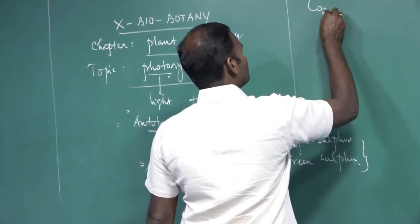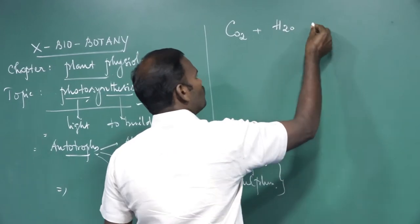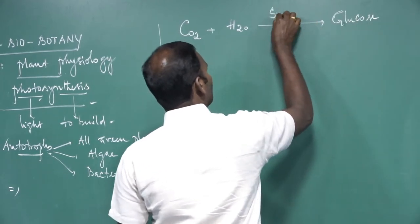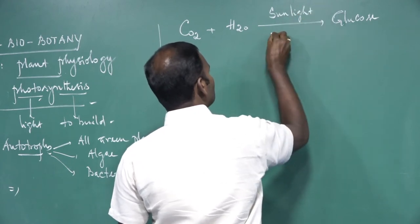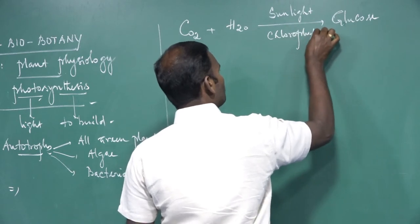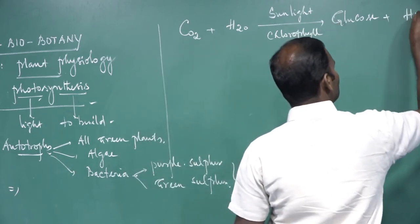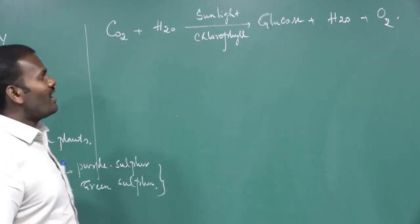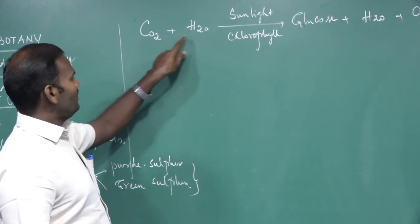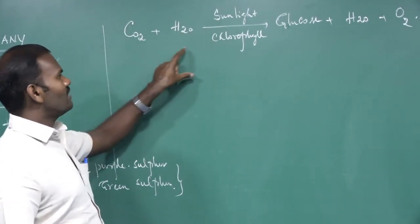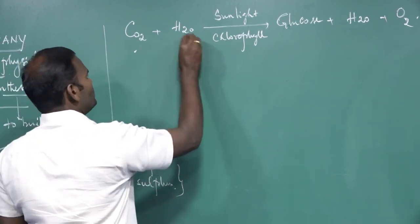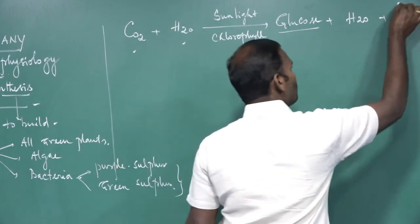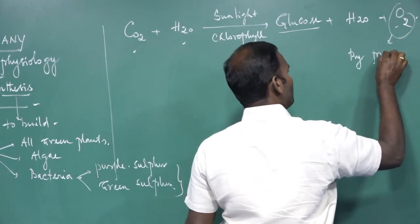During photosynthesis, carbon dioxide combines with water to form carbohydrates such as glucose, with the help of sunlight and chlorophyll pigment. During this process, water molecules are also split and oxygen gas is released. Oxygen is the gas evolved during photosynthesis — it is a byproduct. These are the overall reactions of photosynthesis: carbon dioxide and water, using sunlight, are the raw materials needed.